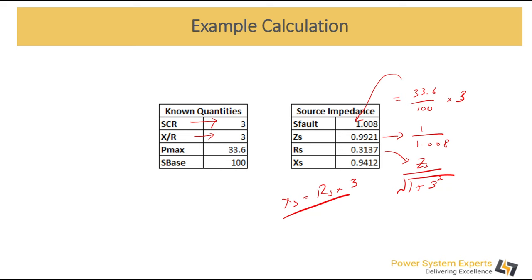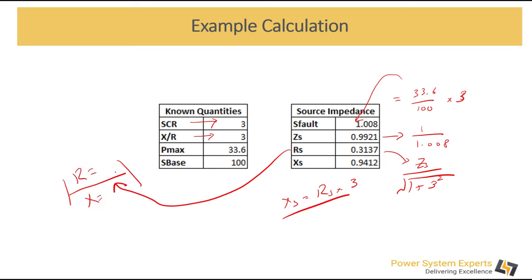Once we have R_s, we multiply it by 3 to get X_s. This is how you model these values — you get your R and X. If you are using PSS/E, which takes values in per unit, you simply copy and paste these values into your R and X tags. But if you are using DIgSILENT or PSCAD, where you need to provide actual values, you need to calculate Z_base first, and your Z_base is going to be kV² divided by your S_base.